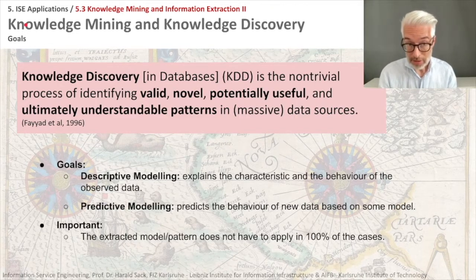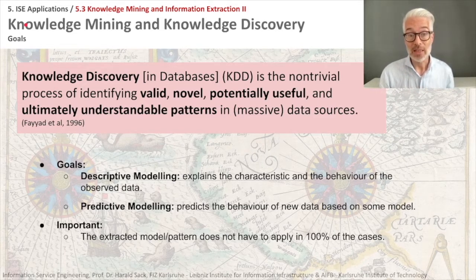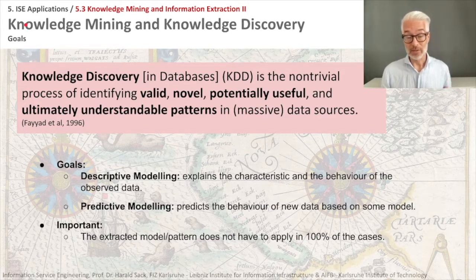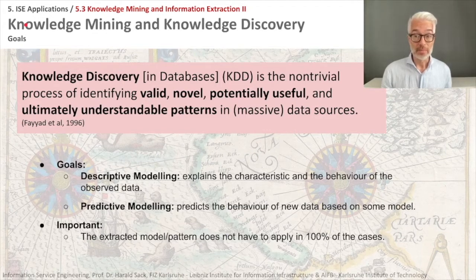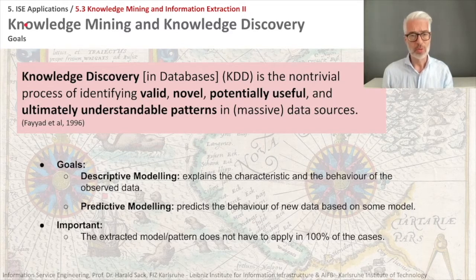We distinguish two different goals that might be there. First of all, we could explain things with knowledge discovery — this is descriptive modeling, which means we want to explain the characteristic and the behavior of the observed data. However, this is only a static description, looking into the past. Sometimes we want to make predictions, and this is predictive modeling, which means we want to predict the behavior of new data based on some model. Importantly, our extracted model or pattern does not have to apply in 100% of the cases, so it's only an approximation — it's a model, not necessarily perfect.